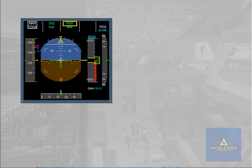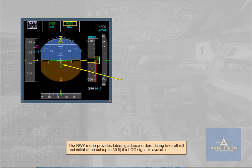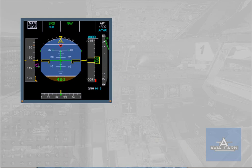The runway mode provides lateral guidance orders during takeoff roll and initial climb-out, up to 30 feet, if a localizer signal is available. Provided V2 is inserted in the PERF page and slats are extended, the Speed Reference System (SRS) will engage automatically at power application, flex or TOGA.